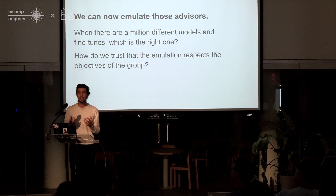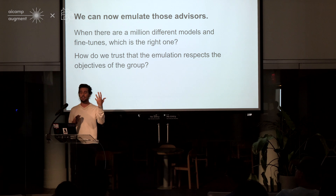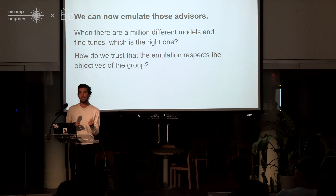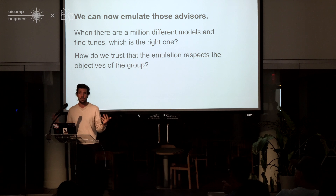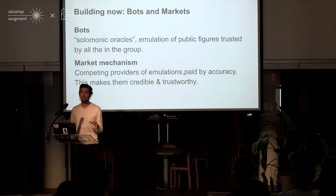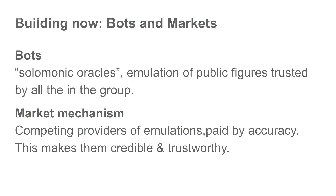How do we trust that that emulation is going to really respect who that advisor is and not have a backdoor that is benefiting one of the people in the group that selected that LLM, or the people that trained that LLM? To test out these theories, we're starting by building two related products. One of them are bots that act as Solomonic oracles — emulations of public figures that are trusted by people in the group, like accountants, advisors, lawyers, or judges, that the group can coordinate around.